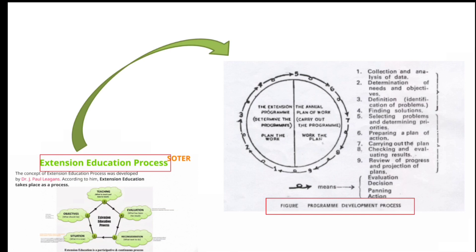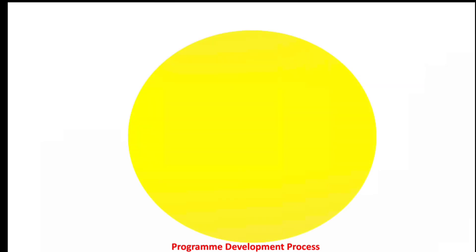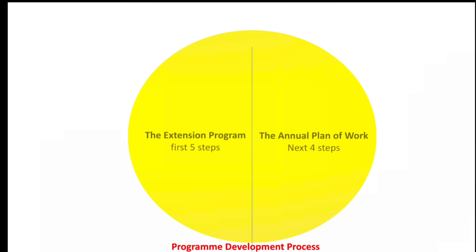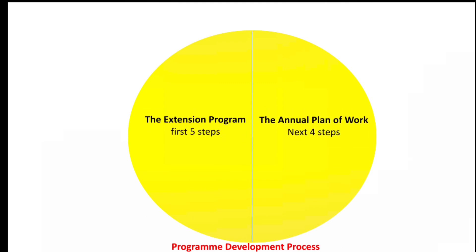Let's understand in detail. In the 9-step model of program development process, the first 5 steps belong to the extension program and the next 4 steps belong to the annual plan of work. In the first 5 steps, we will plan the work. In the next 4 steps, we will work out the plan — that means execute the plan.